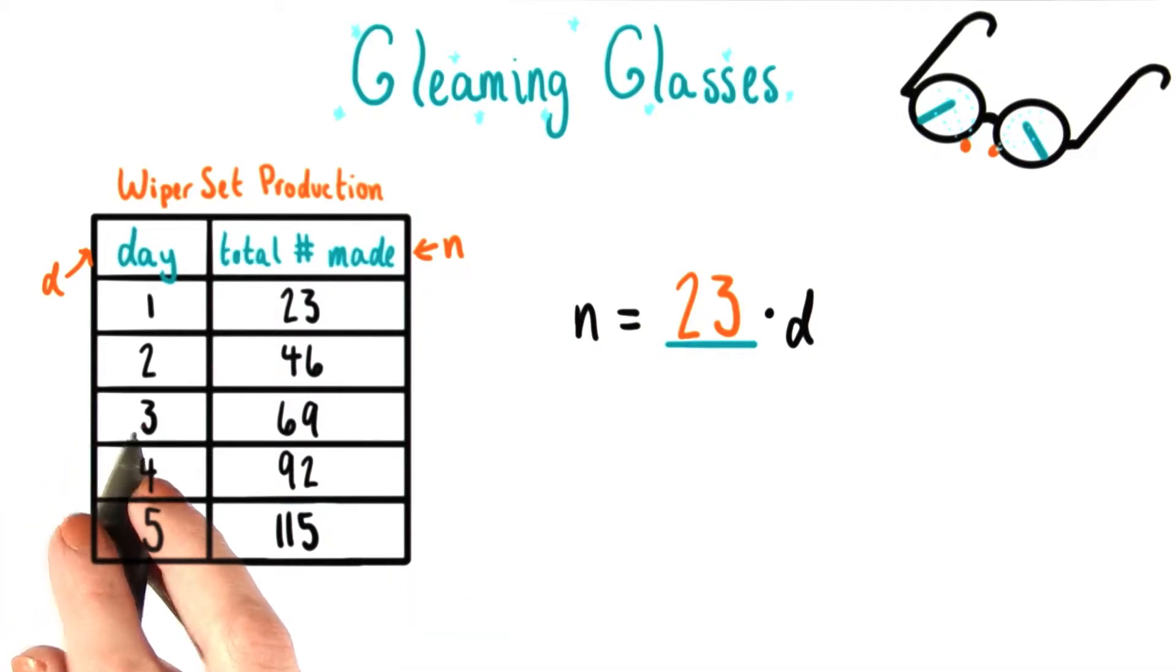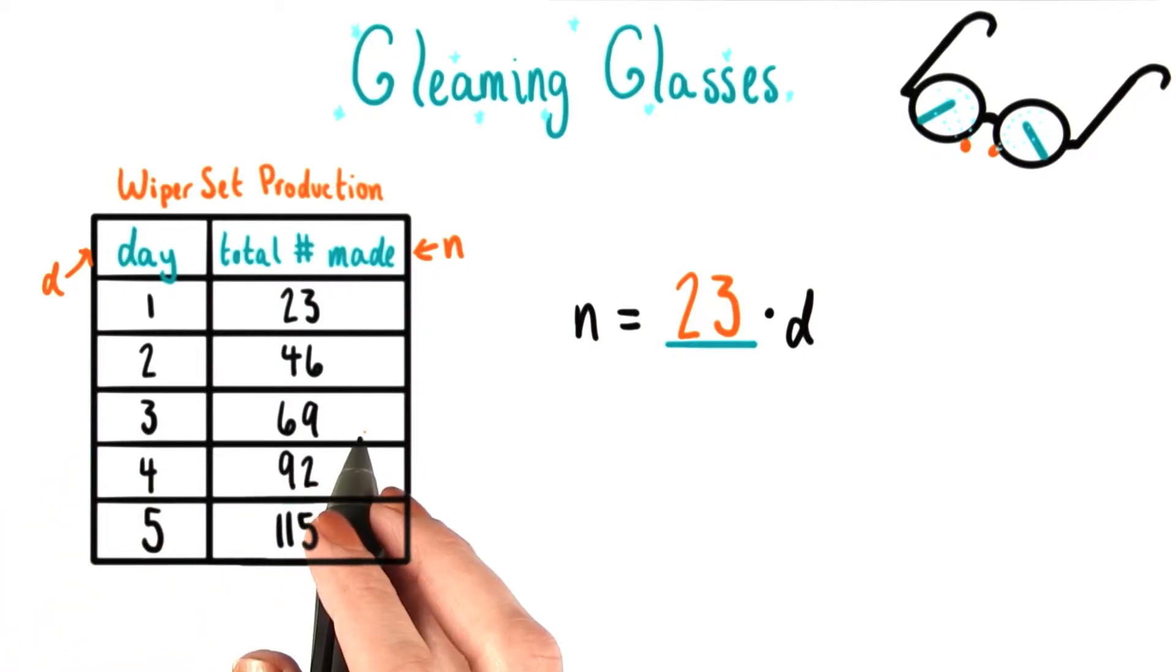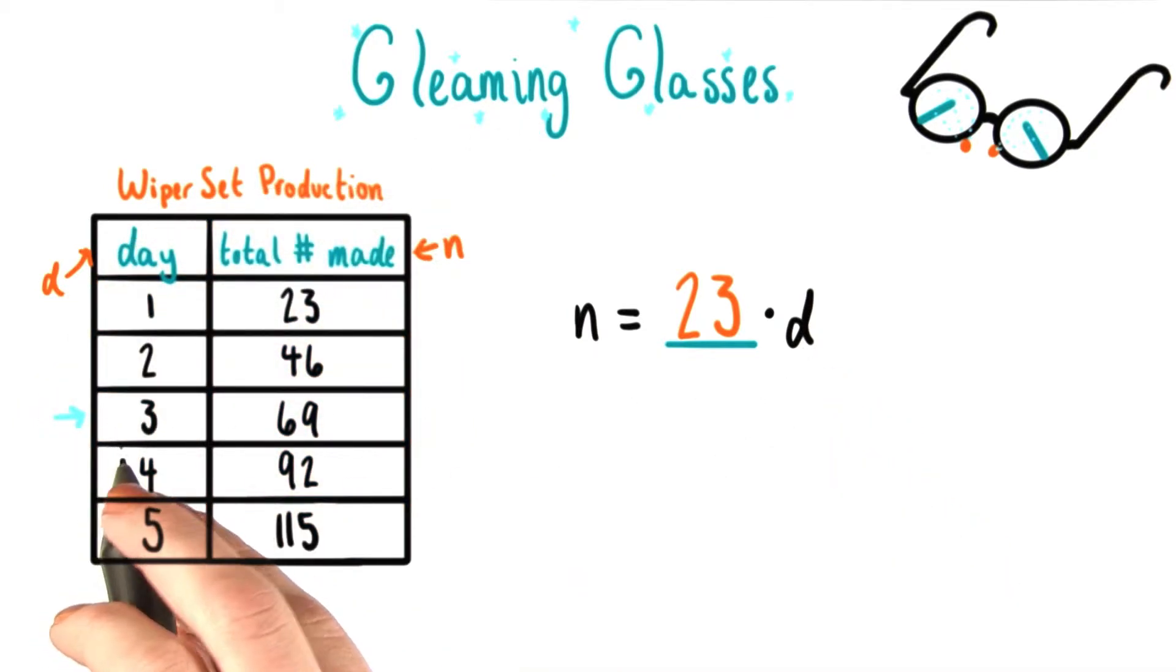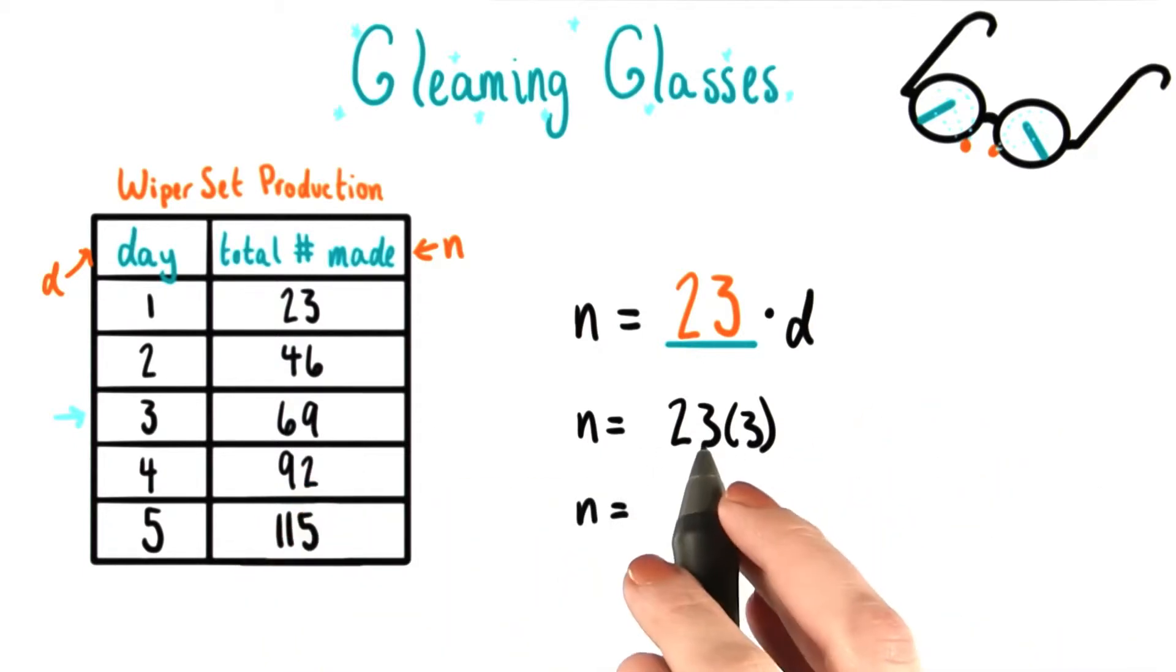We know that after three days, for example, 69 wiper sets have been produced. So that means that if we take d and we replace it with 3, we should get that n equals 69. And sure enough, 23 times 3 is 69.